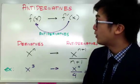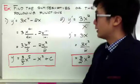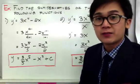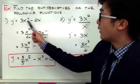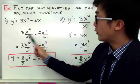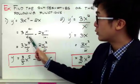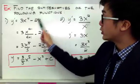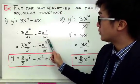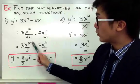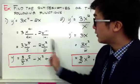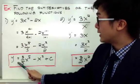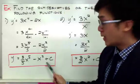Now let's have more examples on how we perform antiderivatives on given functions. For number 1, we have y prime equal to 3x to the 4th minus 2x. Applying the rule — add 1 to your exponent and bring down your new exponent — you get 3x to the 4 plus 1 all over 4 plus 1, minus 2x to the 1 plus 1 all over 1 plus 1, which gives you 3x raised to the 5th all over 5 minus 2x squared all over 2. Simplifying, y from y prime is equal to 3 over 5 times x to the 5th minus x squared plus a constant.